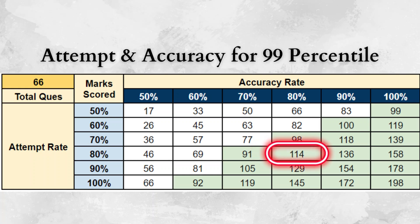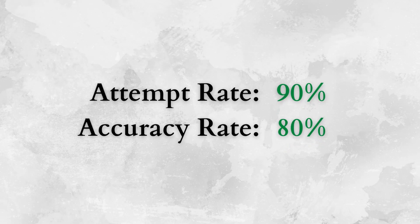Rather than targeting 150 or 60-100 or 50-100, what if you target 80-80? Even with that, you'll be able to fetch the required marks to score a 99 percentile. Similarly, if you target 90% attempt rate and 70% accuracy rate, the threshold will be met. So my suggestion is: rather than thinking you want to attempt all questions or get all questions correct, your target should be about a 90 or 80% attempt rate with a similar level of accuracy. You can target a 90% attempt rate and 80% accuracy rate in all sections, and track that rather than your percentile.